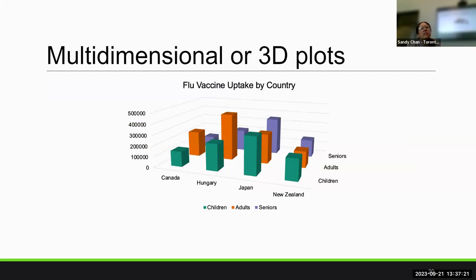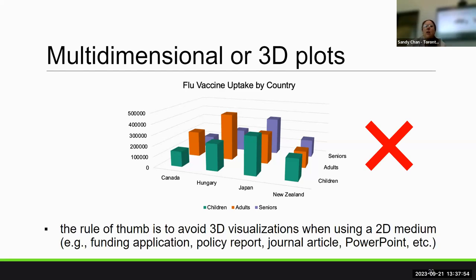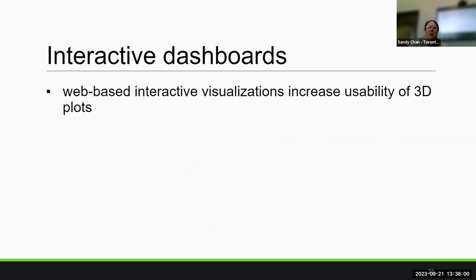We also often see multidimensional or 3d plots. So here we have flu vaccine uptake by country. 3d plots are not a good thing to do in a 2d medium. This is a bad plot. When you do have interactive data visualizations, which I have time, I'll show you one of them with the 3d plots. It's, it's a very useful tool to be able to, to visualize, multiple variables at once and their relationships and interactions, but yeah, avoid it when you're, when you're publishing in, in 2d and then, as I said, interactive dashboards. So web-based, web-based interactive visualizations. So I'm going to try to click a link. I don't know if it's going to take us out of,